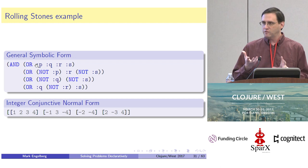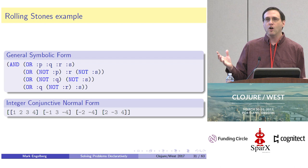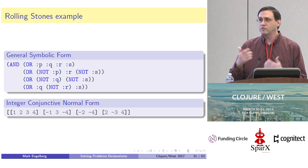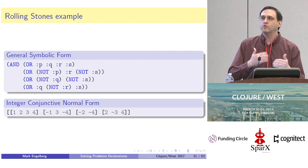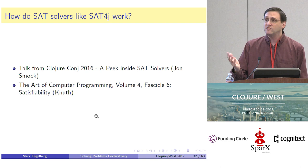In fact, this particular symbolic formula is already in conjunctive normal form, so it's a pretty straightforward transformation. But Rolling Stones can actually handle arbitrarily complex formulas. If it needs to, it will create temporary variables for each of the sub-expressions before passing it to the solver. When it gets results back, it filters out all those temporary variables, so it comes back to you as a completely seamless process — you don't have to worry about any of the stuff going on behind the scenes.